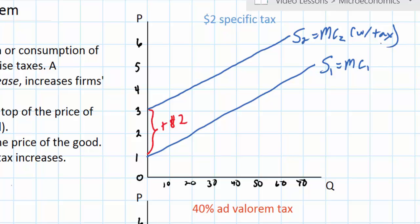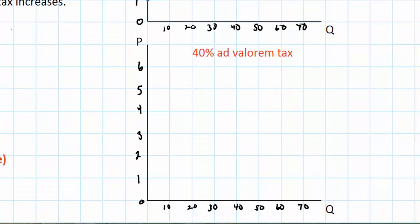Let's look down at the 40% ad valorem tax. We're going to do a mathematical illustration of this in a moment, but we're going to do a simple graphical explanation first. We'll start with the same supply curve that we had in the graph above. We'll call it S1 equals MC1. Now instead of a per unit specific tax being placed on a good, we're going to see an ad valorem tax which increases as the price of the good increases.